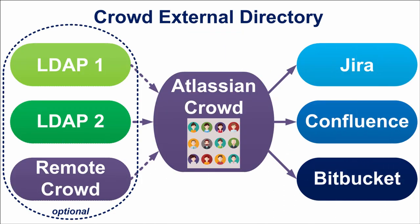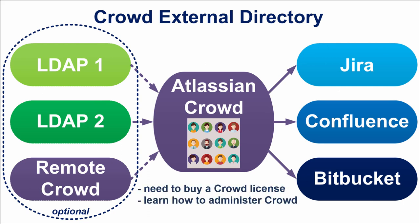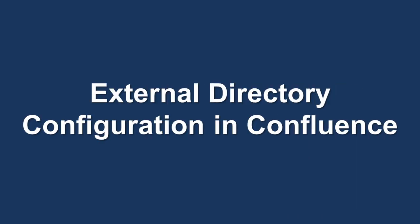The third option is Atlassian Crowd, which is especially useful if you have several Atlassian applications and several external directories. Crowd manages all connection settings and lists of users and groups, though you need to buy a license and learn to administer it. Crowd also supports single sign-on, allowing users to log into only one Atlassian application and be automatically logged into the rest. Let's see how to configure external directories in Confluence using Crowd as an example, and briefly describe how to configure Crowd itself.